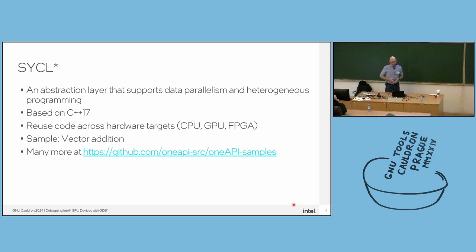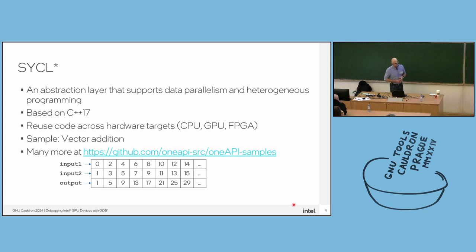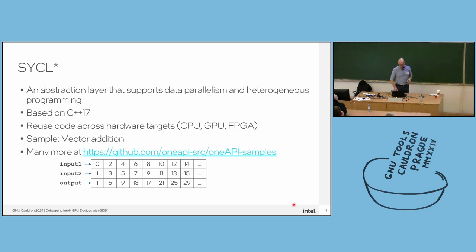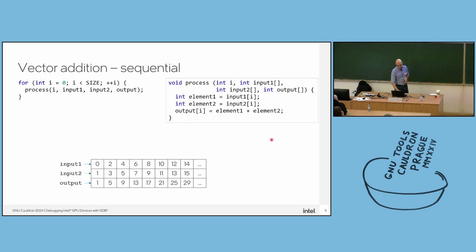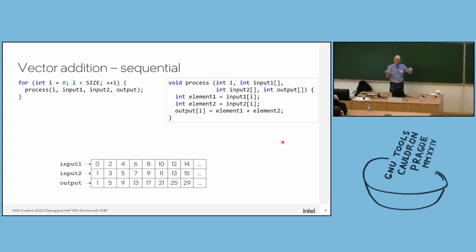To give an example of how SYCL looks, I'll use a very simple application: vector addition. This is a toy sample — an embarrassingly parallel program. We have two arrays of inputs and we want to add the elements pairwise and obtain the output. If writing it sequentially, the most obvious approach is a for loop. I deliberately abstracted out the body of the loop into a function called 'process'. The mental model is that there is an index i, and based on that index we process our data: read from input 1, read from input 2, combine them, and write back to the output.